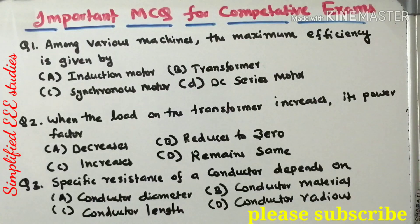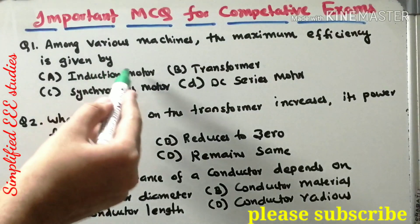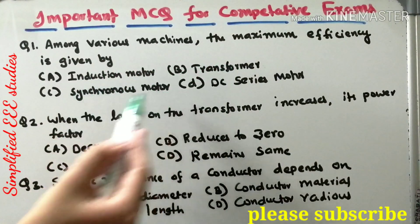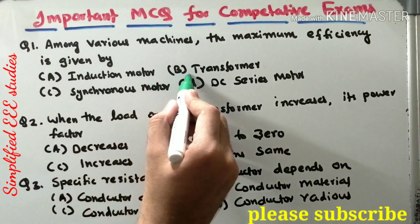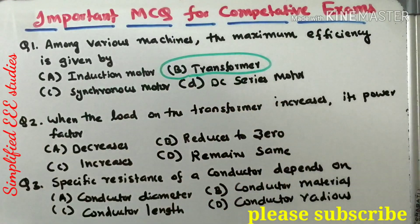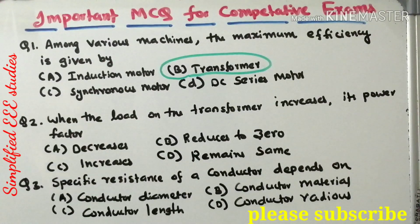The first question is: among various machines, the maximum efficiency is given by which device? Options are induction motor, transformer, synchronous motor, and DC series motor. The right answer is transformer, option B. Because compared to other devices, transformer is stationary — there is no rotating part — so it shows higher efficiency. Induction motor, synchronous motor, and DC series motor all have rotating parts, so they are not stationary devices. Transformer shows the highest efficiency.